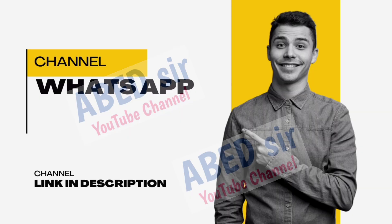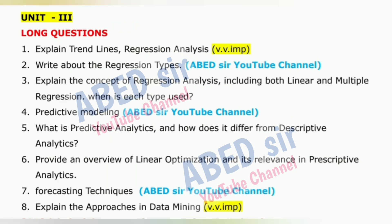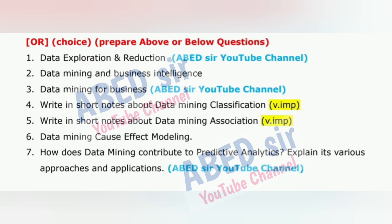Fourth, always start each answer on a new page. Fifth, write the question number clearly at the top left and center of the page. Sixth, don't miswrite or change question numbers. Seventh, use headings and subheadings and highlight them neatly — it makes your answer more readable. Eighth, use the last page as rough work and label it clearly. Ninth, in the last five minutes, check all question numbers and quickly review your answers to fix any small mistakes.